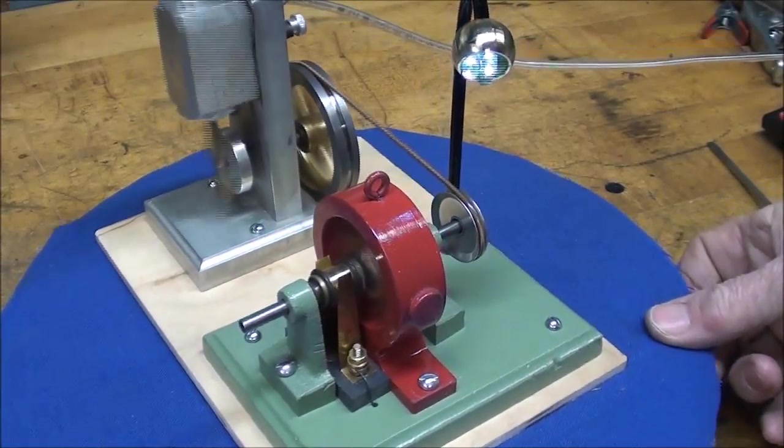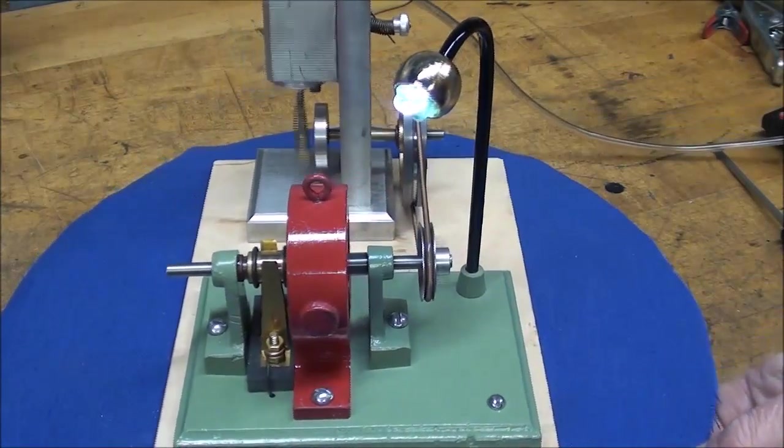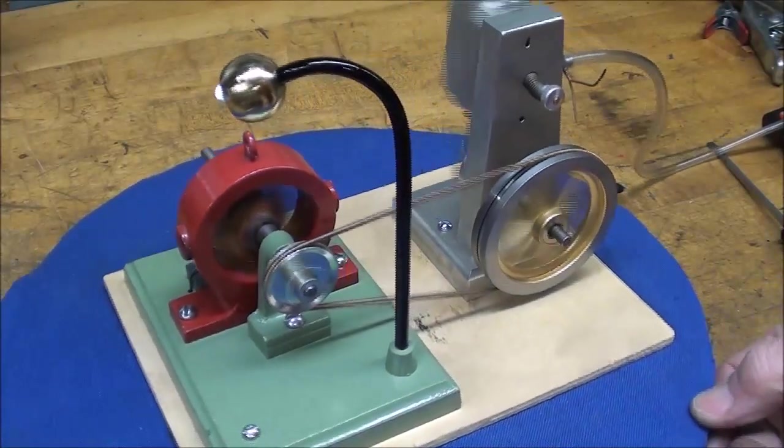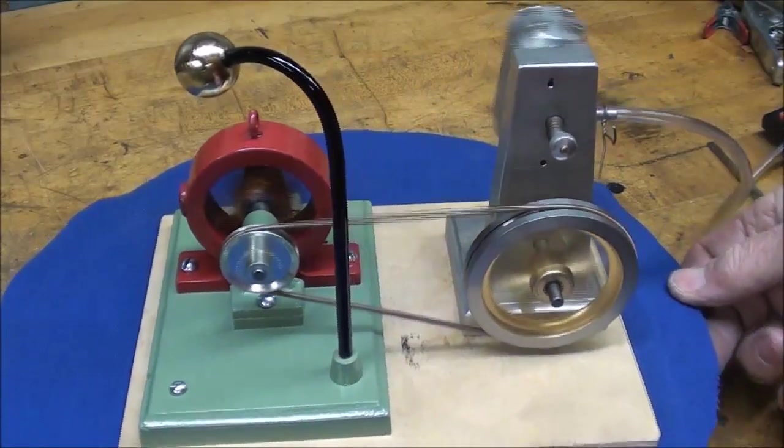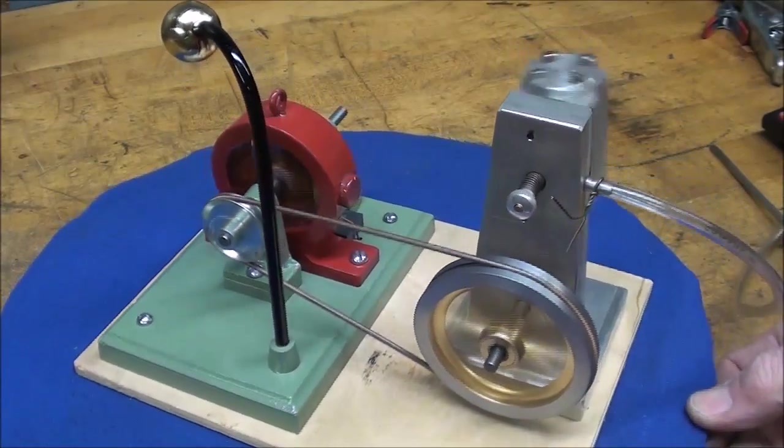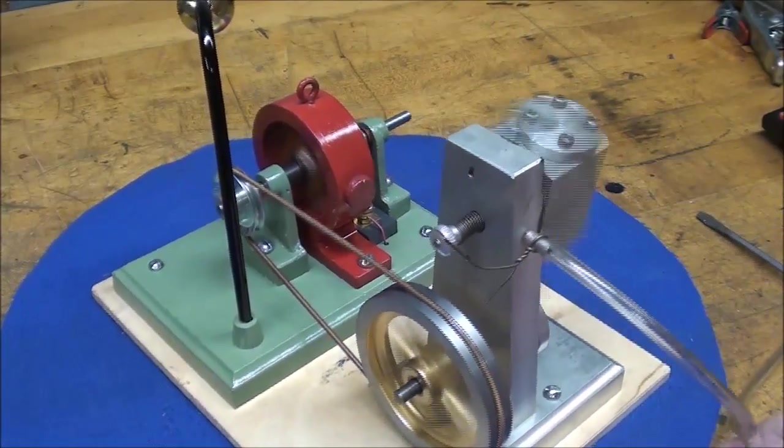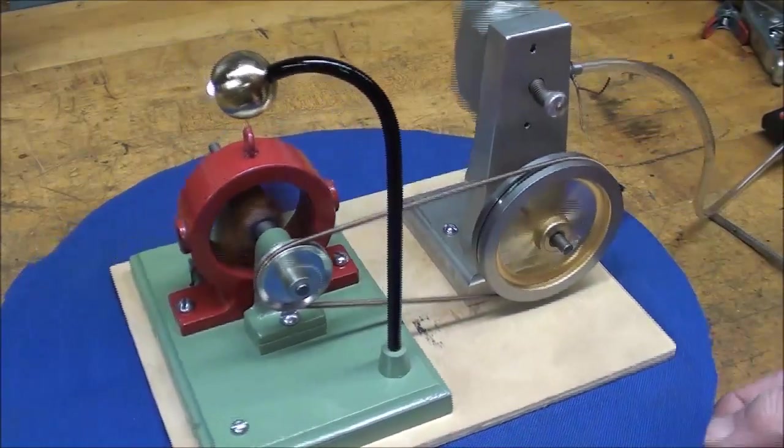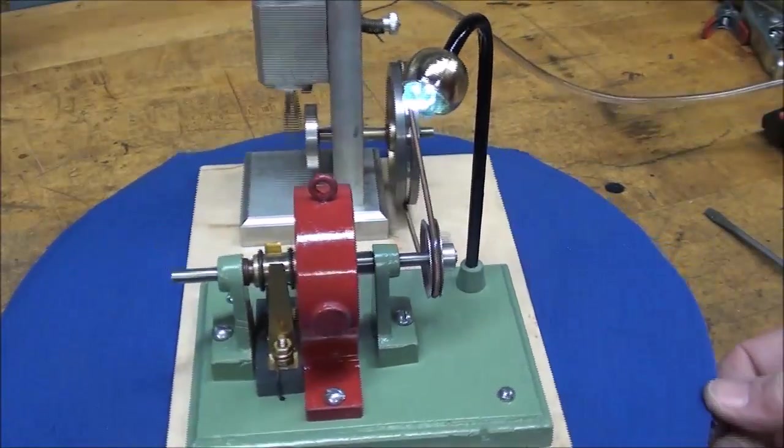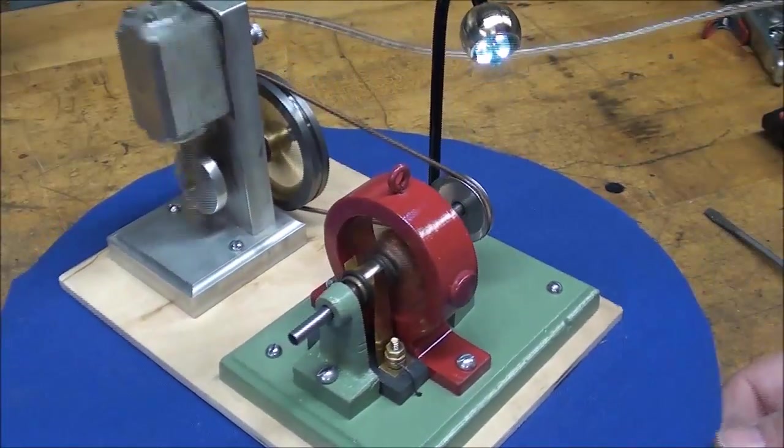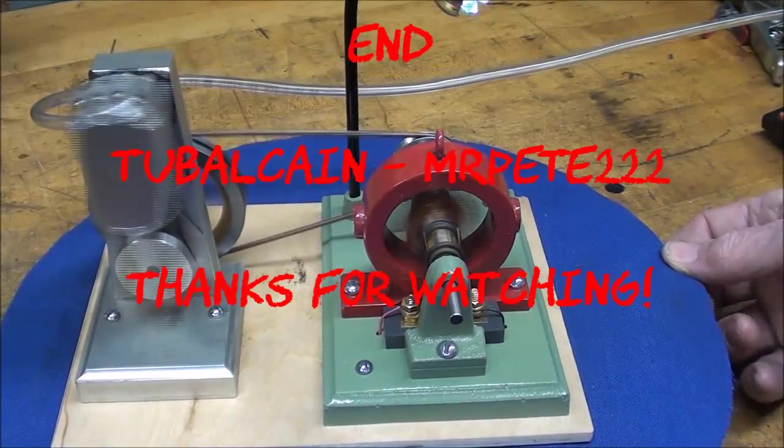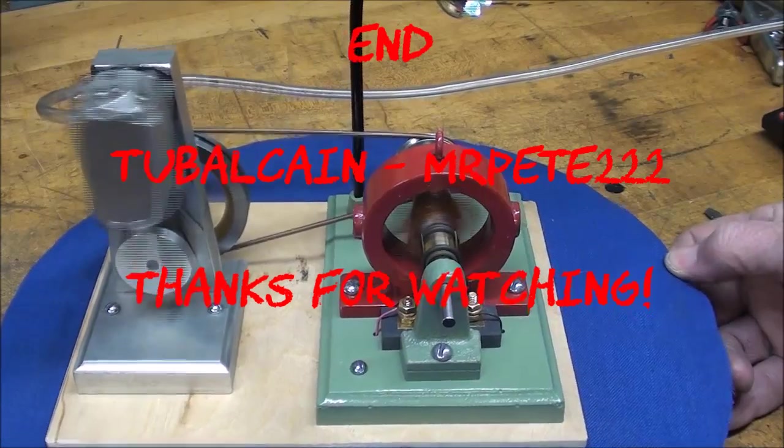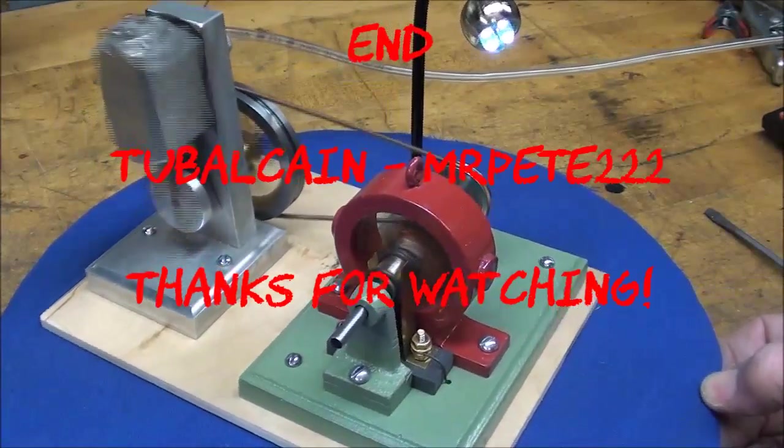Well, that's it, ladies and gentlemen. This is part seven of the seven-part series on building a little DC dynamo. Hope you enjoyed it. Purrs like a kitten. Leave a comment if you like it. Remember, there are no plans available for this. And this is Tubal Cain saying thanks for watching and so long for now. And I'll see you in the next video.